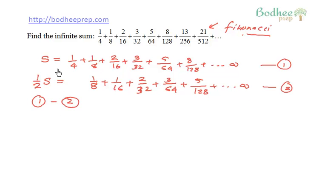So let me do 1 minus 2—that means subtracting equation 2 from equation 1. So I will be getting S minus 1/2 of S, which will be equal to half of S, which will be equal to 1/4.